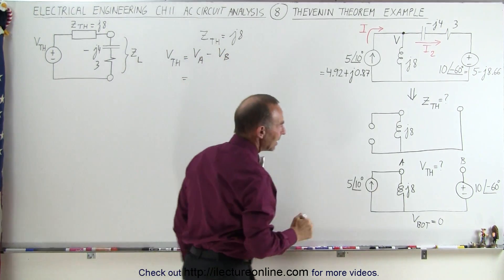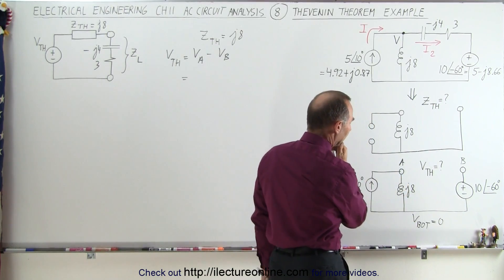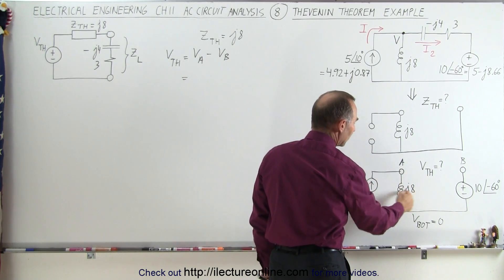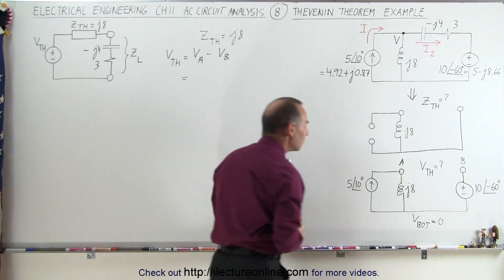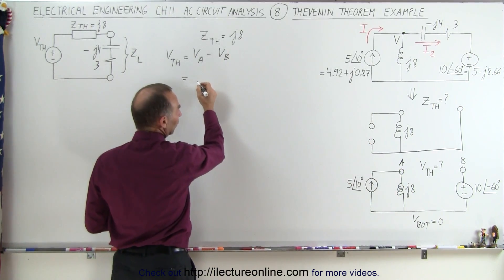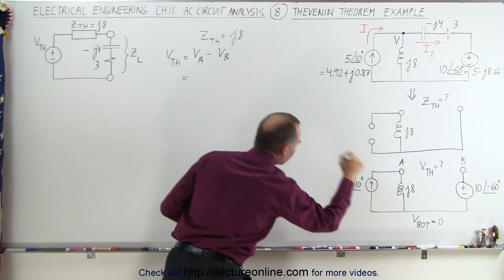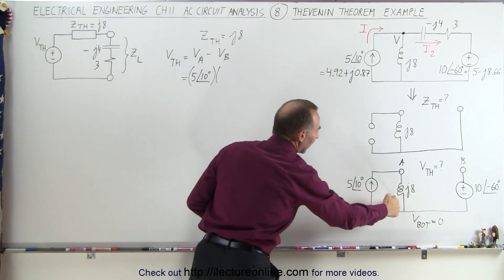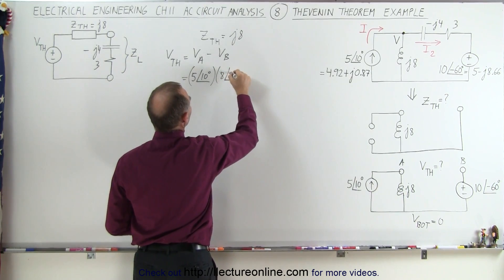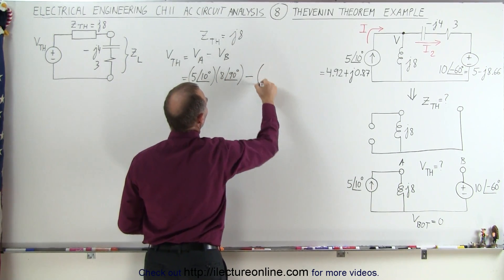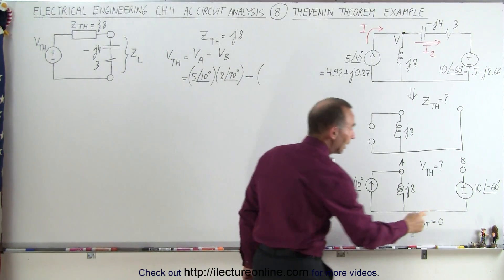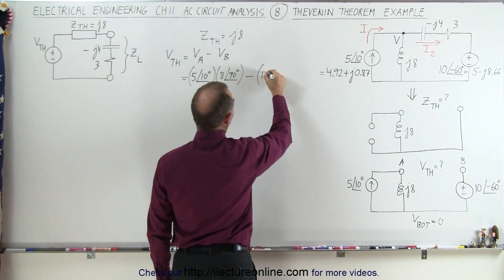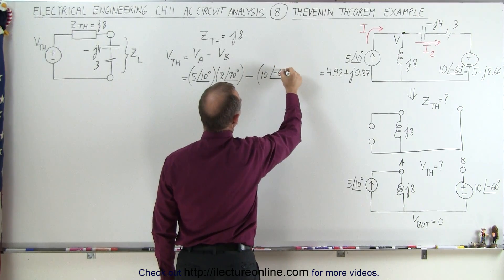We can say that V_Thevenin equals the voltage at A minus the voltage at B. The voltage at A is going to be the voltage rise from the reference to point A. We have a current flowing through there, so the voltage is simply the current times the impedance. The voltage at A is going to be 5 at a phase angle of 10 degrees multiplied by J8, which is 8 at a phase angle of 90 degrees, minus voltage at B, which is 10 volts at a phase angle of minus 60 degrees.